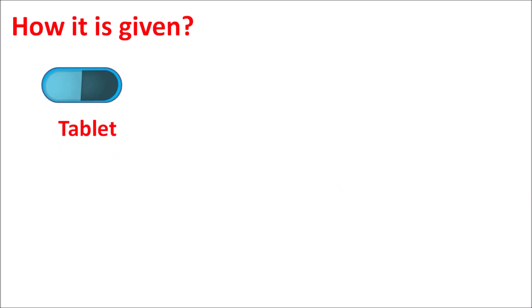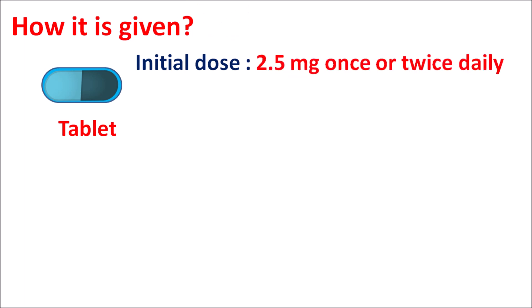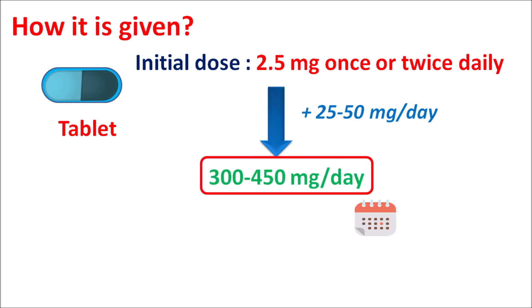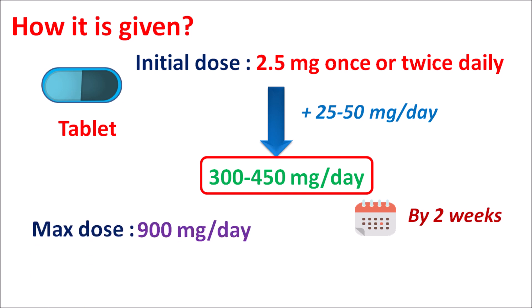Clozapine is available as a tablet. The initial dose should be started at 12.5 mg given either once or twice daily. Based on the tolerability of the patient, the dose can be slowly increased by 25 to 50 mg per day, such that the target dose is around 300 to 450 mg per day. This dose adjustment should be done over 2 weeks of treatment. The maximum dose is around 900 mg per day and should not be exceeded. With increasing dose, side effects are also increased, so care should be taken to monitor for side effects at high doses.